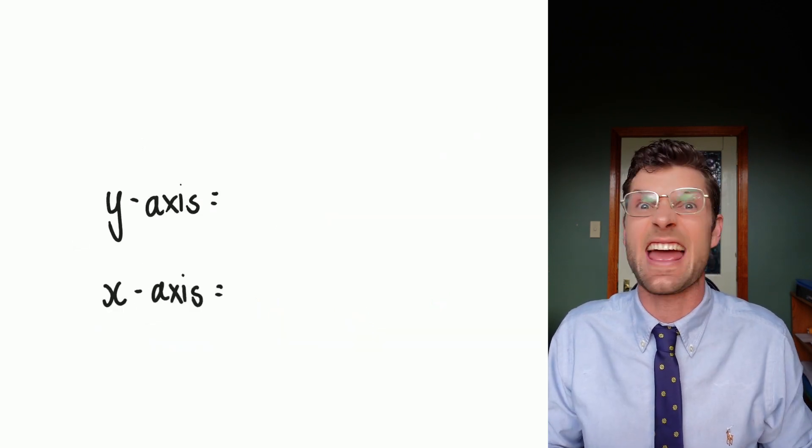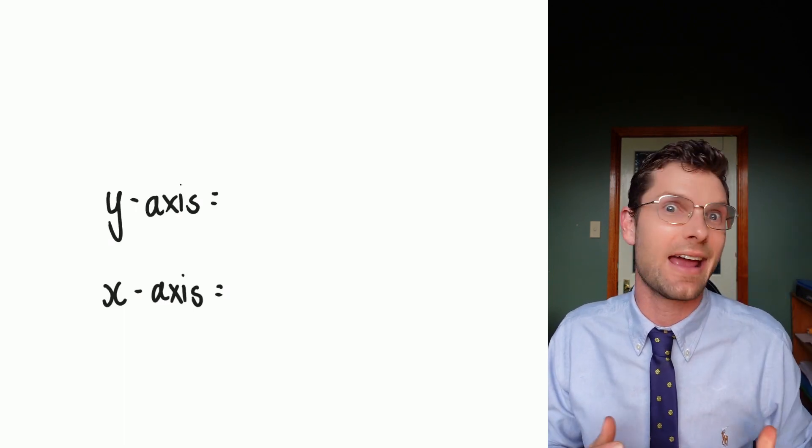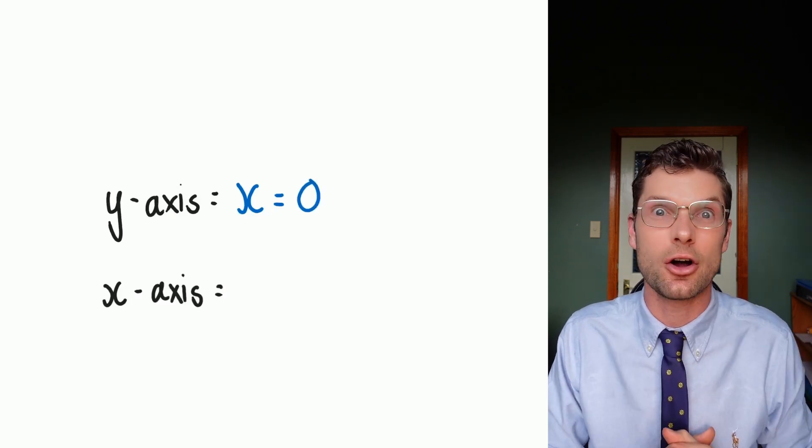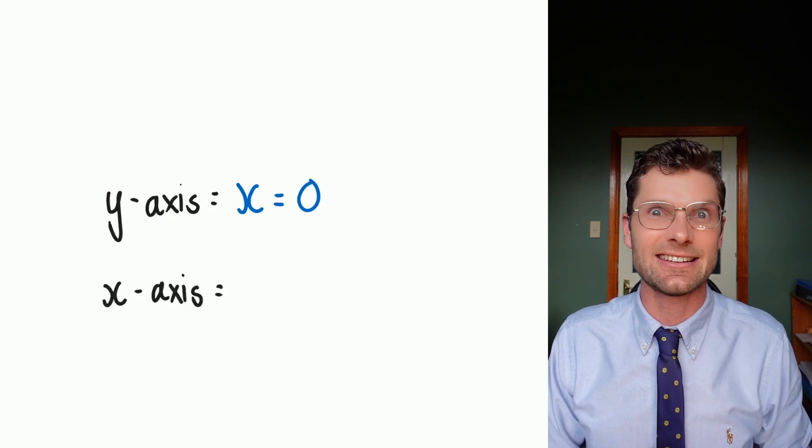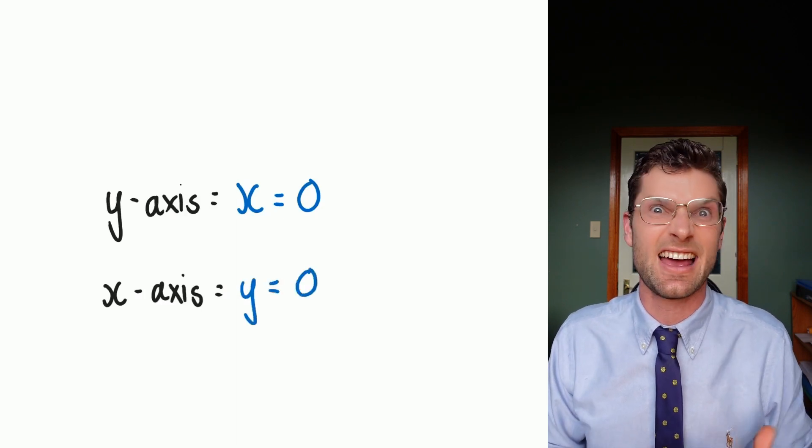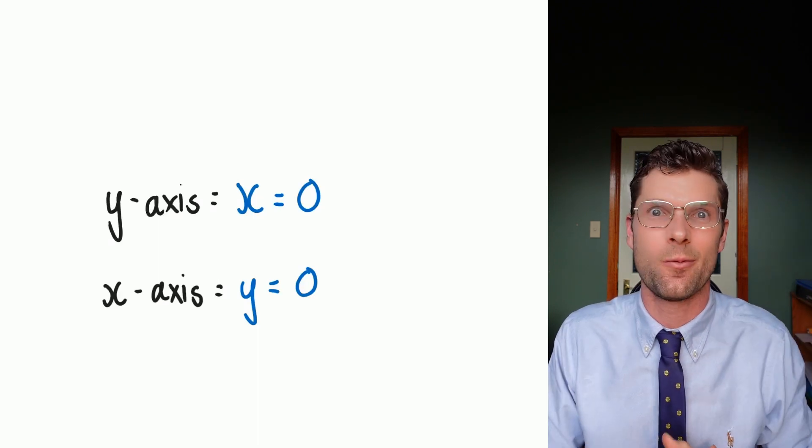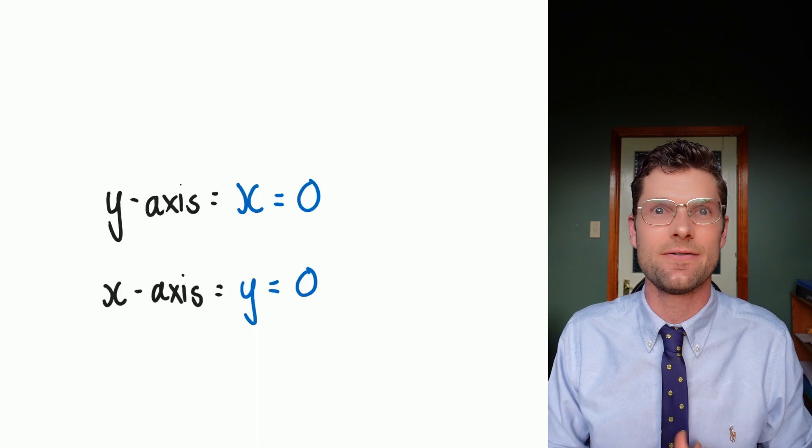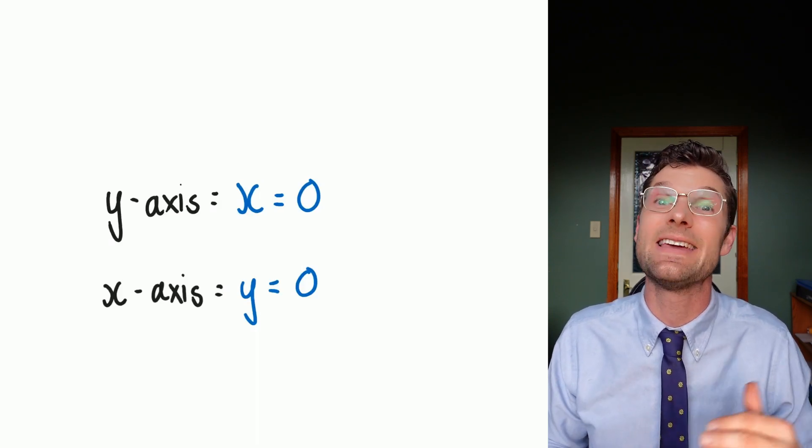So the y-axis, any point on the y-axis, anything that's on that vertical axis, x is definitely equal to zero because the minute you move off it, you're no longer on the y-axis. And the x-axis, the same thing applies. At every point, y is equal to zero. If you go up one, well, y is not zero anymore. So we can use this knowledge that y is definitely zero or x is definitely zero to really help us find the other intercept.